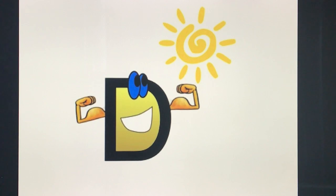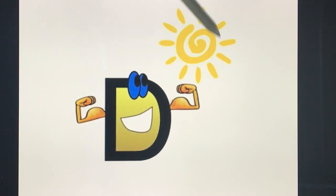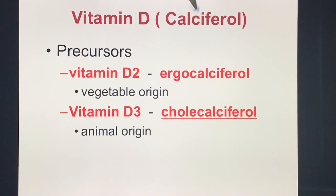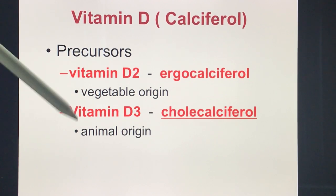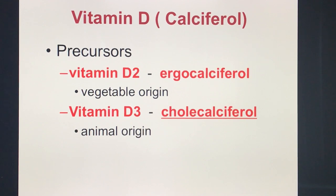Next is Vitamin D. To clarify a common misconception: it is wrong to say patients get Vitamin D from sunlight — sunlight is required in the metabolism of Vitamin D, but what you get from sunlight is a sunburn. The biochemical form is calciferol. Vitamin D has two precursors: vegetable origin is Vitamin D2, ergocalciferol; animal origin is Vitamin D3, cholecalciferol.